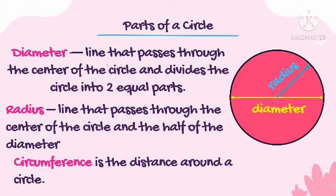Next is the circumference. Circumference is the distance around a circle — the distance around a circle. The broken lines in the illustration represent the circumference.